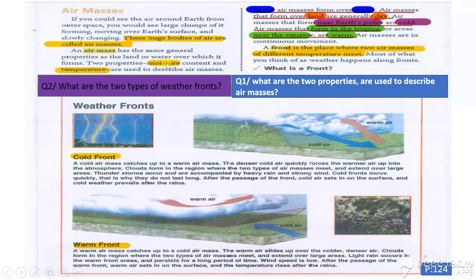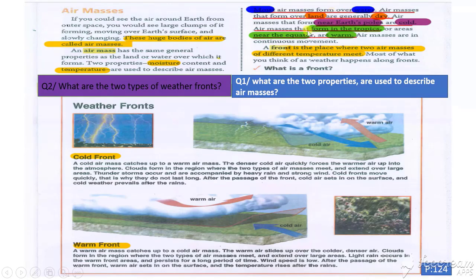Moisture content and temperature are used to describe air masses. Moist air masses form over water, but air masses that form over land are generally dry. Air masses over land are dry, but air masses over water are moist. And air masses that form near Earth's poles are cold, but air masses that form in the tropics or areas near the equator are warm.